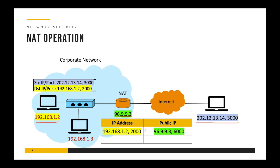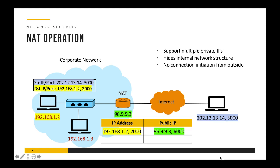If you have multiple internal systems, NAT can simply replace each internal private IP address with its own public IP address and perform the translation. This way it can support thousands of internal private IP addresses without needing to buy public IP addresses. NAT supports multiple private IP addresses, hides the internal network structure so that outsiders cannot know the IPs of internal systems, and does not allow connection initiation from the outside. Based on these three key properties, NAT offers tremendous advantages in reusability of a single public IP, hiding the internal network structure, and preventing external connection initiation.